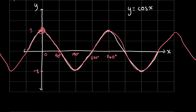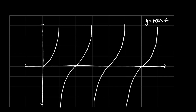Now let's look at the graph of y equals tan of x. This graph is very different from the other two. There isn't really a maximum or minimum point — unlike sine and cosine which couldn't go over 1, the value of tan can go infinitely high. We start at 0 and the graph just keeps going up and up. There's something called an asymptote at 90 degrees, and the graph will never intersect this line, so tan of 90 is undefined.